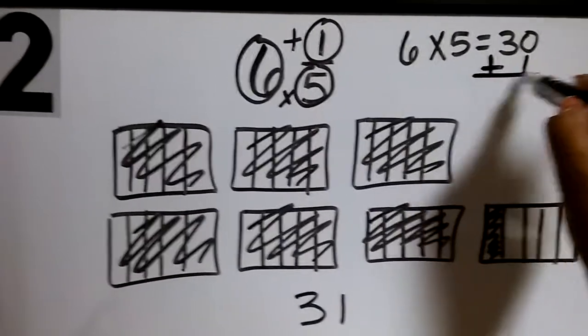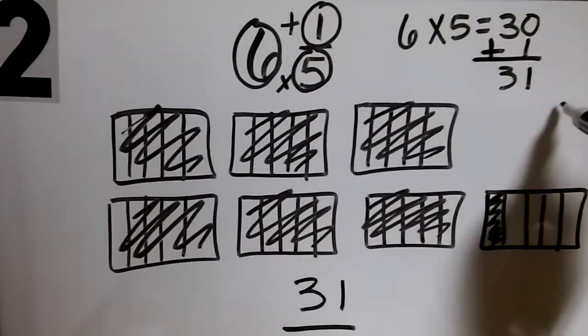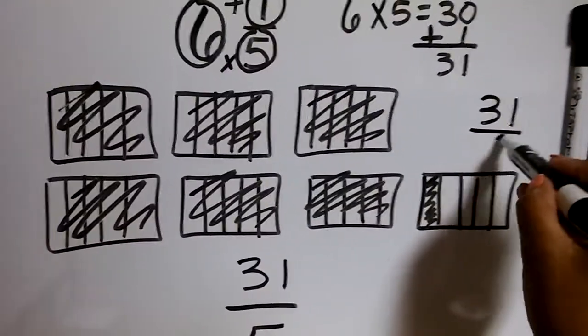And adding that product to my numerator, which is thirty-one. And of course, the denominator stays the same.